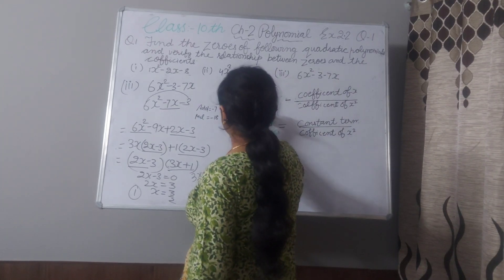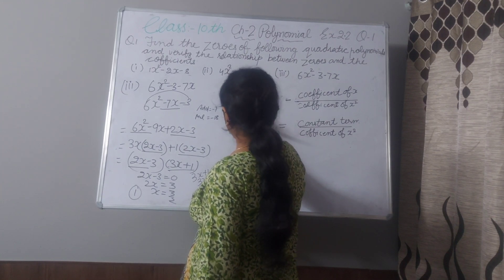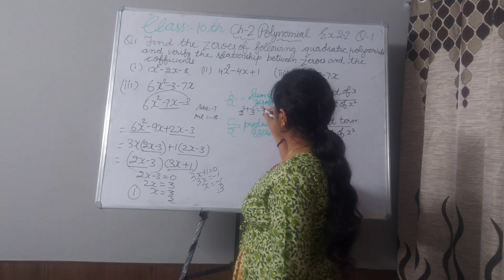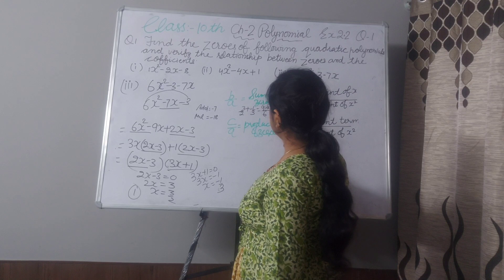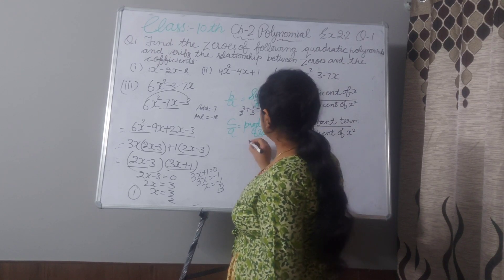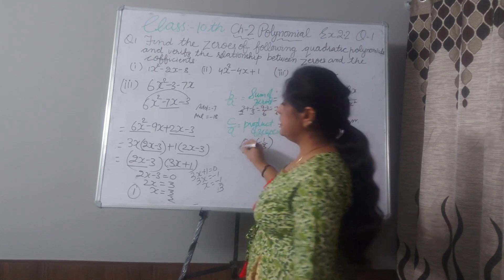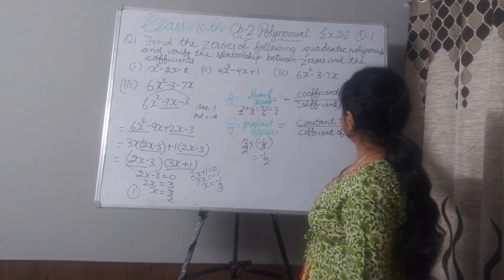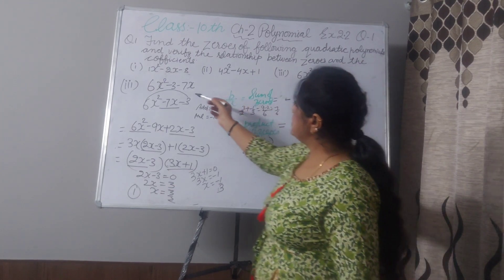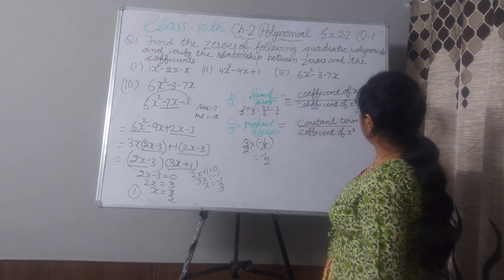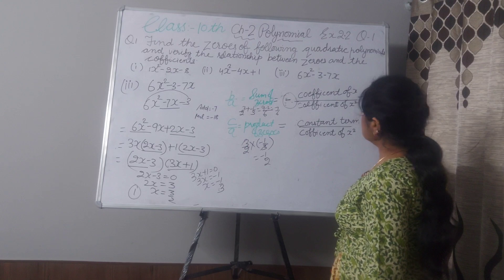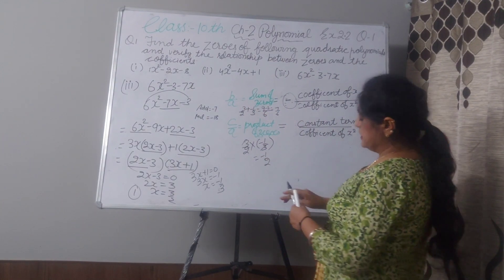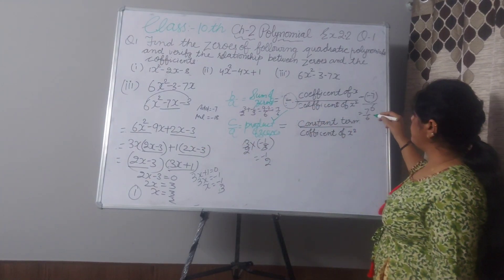Now sum of zeros: 3/2 plus (minus 1/3). Taking LCM as 6: (3×3 minus 1×2) over 6 equals (9 minus 2) over 6 equals 7/6. Now verify by formula minus b by a: coefficient of x is minus 7, so minus (minus 7) divided by 6 equals 7 by 6. By solving, sum is 7/6, and by the relationship formula, also 7/6. Verified.